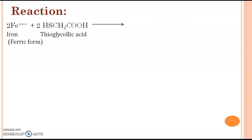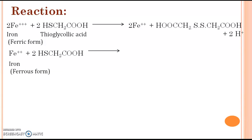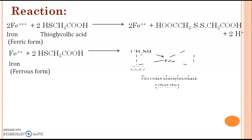Moving to the reaction, the first step is the conversion of the ferric form into the ferrous form — that is, reduction of ferric to ferrous with the help of thioglycolic acid. In the second step, this ferrous form reacts with thioglycolic acid to form a coordinate compound, ferrous thioglycolate, which has a purple color.